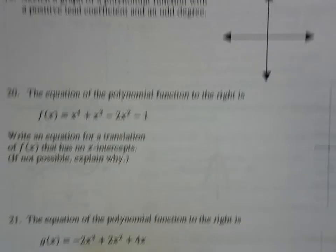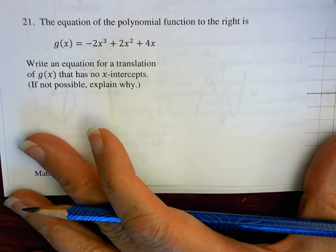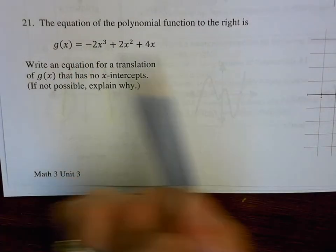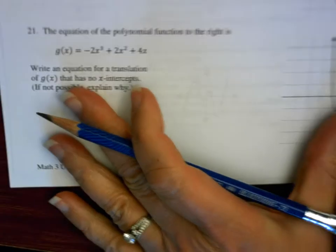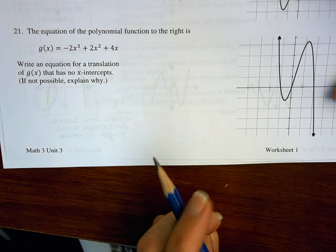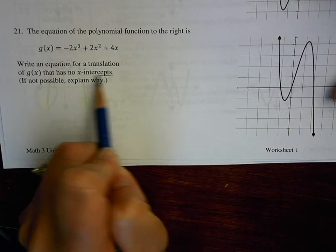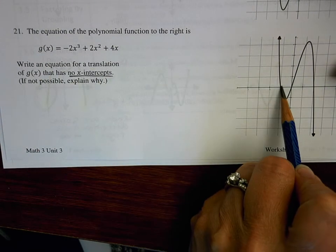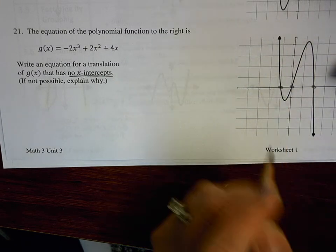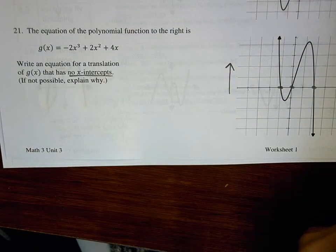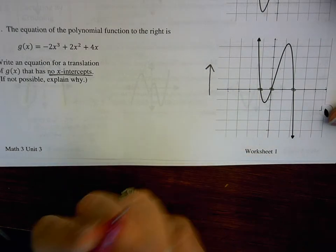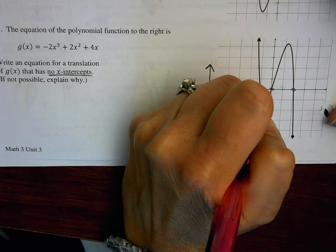Let's take a look at question number 21. The equation of the polynomial function corresponds to a picture to the side, and they want us to write an equation for a translation of g(x) that has no x-intercepts. Right now I have three x-intercepts. If I were to translate this graph up, I could get rid of a couple of x-intercepts. So let's move the whole graph up, say, two spots.